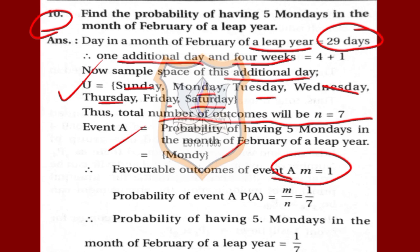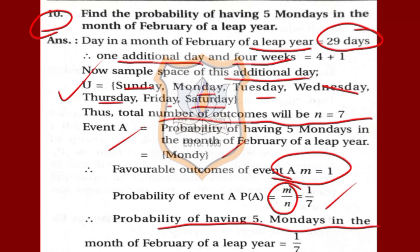Probability of event A = M/N = 1/7. So the probability of having 5 Mondays in the month of February of a leap year is 1/7.